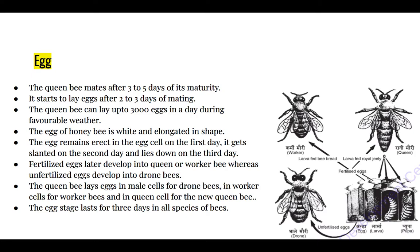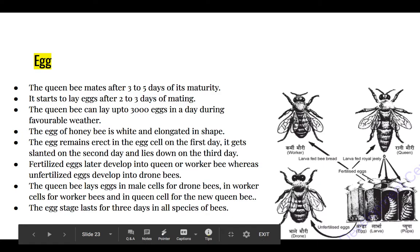The queen bee mates three to five days after emerging from the pupa, and two to three days after mating it starts laying eggs. It can lay 3,000 eggs in a day during favorable weather. The egg is white in color and elongated in shape.